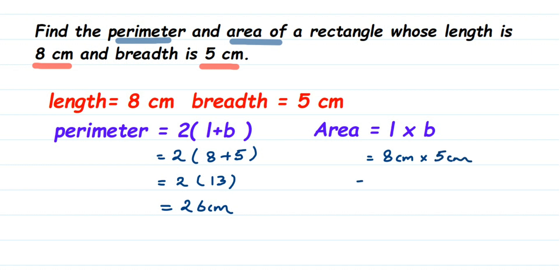8 × 5 = 40, and centimeter multiplied by centimeter gives centimeter square, so it's 40 cm². This was a simple question, but you can expect this kind of question for two marks—a direct question to find the perimeter and area of a rectangle.